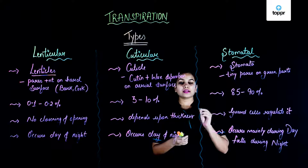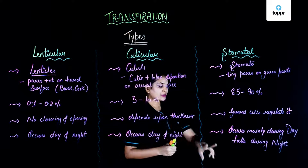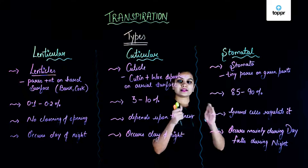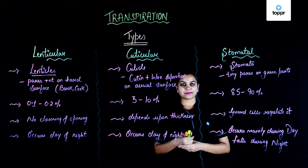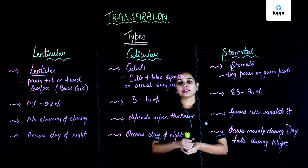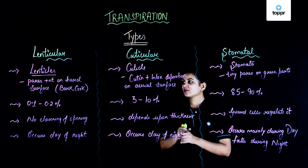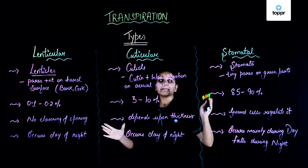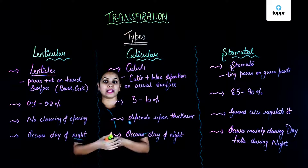Since guard cells open the stomata during the day, transpiration through stomata occurs mainly during the day. Since guard cells close the stomata at night, transpiration hardly occurs at night. There is an exception in CAM plants, where guard cells open during the night and close during the day. So the three types of transpiration occur mainly through stomata, then cuticle, and lastly lenticels.